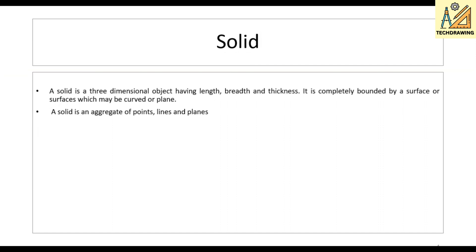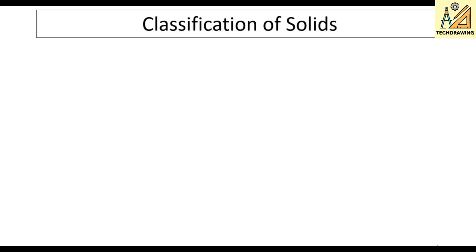Now let us study this topic from the slides. A solid is a three-dimensional object having length, breadth, and thickness, completely bounded by surfaces which may be curved or plain. A solid is an aggregate of points, lines, and planes — starting from a dimensionless point, then one-dimensional lines, two-dimensional planes, and now three-dimensional solids.